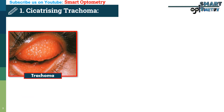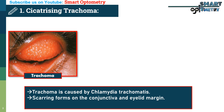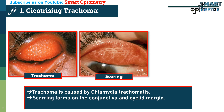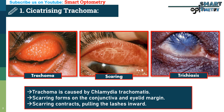1. Cicatrizing trachoma. Cicatrizing trachoma is caused by repeated infections with Chlamydia trachomatis. Over time, scarring forms on the conjunctiva and eyelid margin. When scar tissue heals, it contracts, pulling the lashes inward toward the cornea, leading to trichiasis formation.